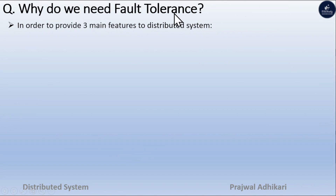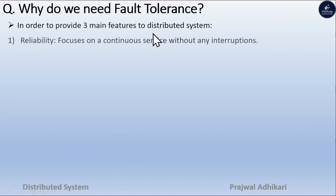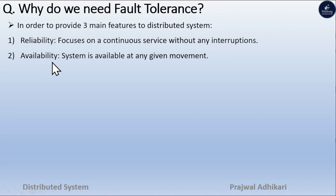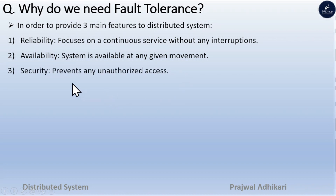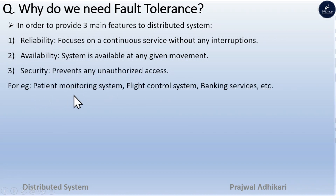Why do we need fault tolerance? In order to provide three main features in distributed systems, we need fault tolerance: Reliability — focuses on continuous service without any interruption; Availability — the system is available at any given moment; and Security — prevents any unauthorized access. Examples include passenger monitoring systems, flight control systems, banking services, and so on.